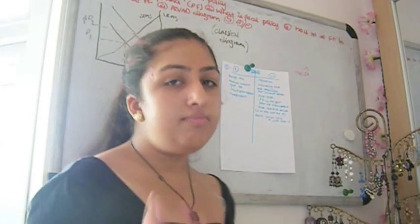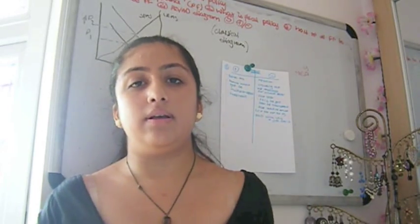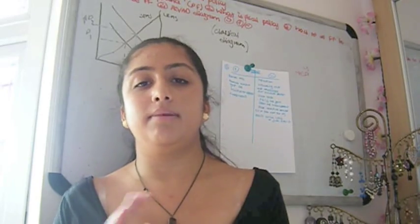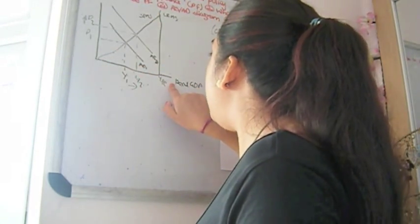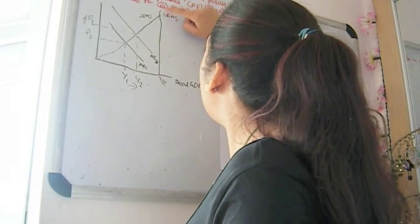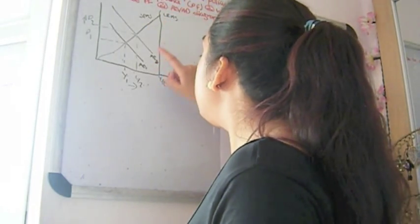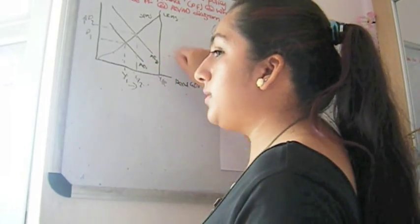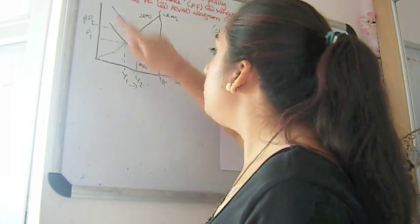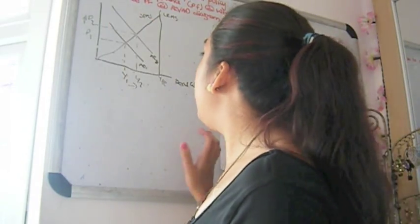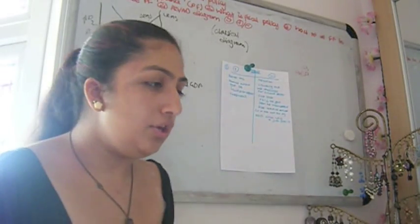Government spending is a part of aggregate demand because the formula for AD is: C (consumption) + I (investment) + G (government spending) + exports − imports. In the diagram, the price level is on the vertical axis and real GDP on the horizontal. Using a classical diagram, we have a completely inelastic long-run aggregate supply and a short-run aggregate supply. When aggregate demand increases because government spending is rising — an expansionary fiscal policy — we see real growth from Y1 to Y2 and price level increases from P1 to P2. At the long-run aggregate supply, you have full employment with all resources being used.